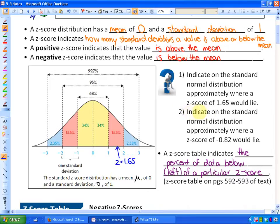Question number two says, indicate on the standard normal distribution approximately where a Z-score of negative 0.82 would lie. Negative 0.82 would be closer to a Z-score of negative 1 than a Z-score of 0. So roughly there. You'll see the usefulness of this in a second.